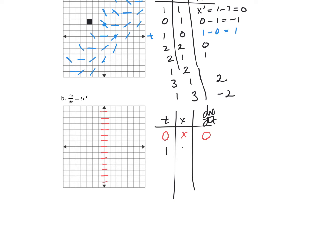When T equals 1, X can be anything, and I get a slope of e to the 1—about 2.71. So everywhere along the vertical line T equals 1, the slope is e. When T equals 2, I get 2e squared, which is almost a straight vertical line. As T gets larger, the slopes approach vertical lines.